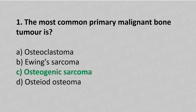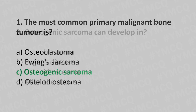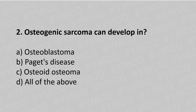The answer is option C, osteogenic sarcoma. Question number two: osteogenic sarcoma can develop in option A osteoblastoma, option B Paget's disease, option C osteoid osteoma, option D all of the above. The answer is option B, Paget's disease.